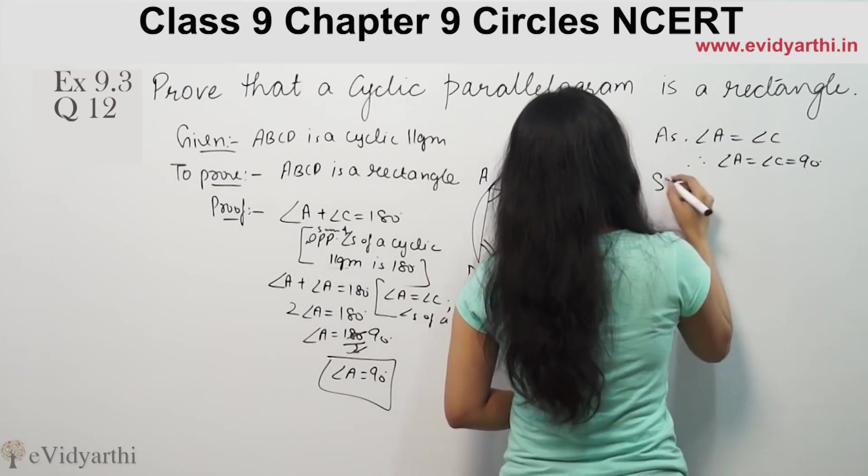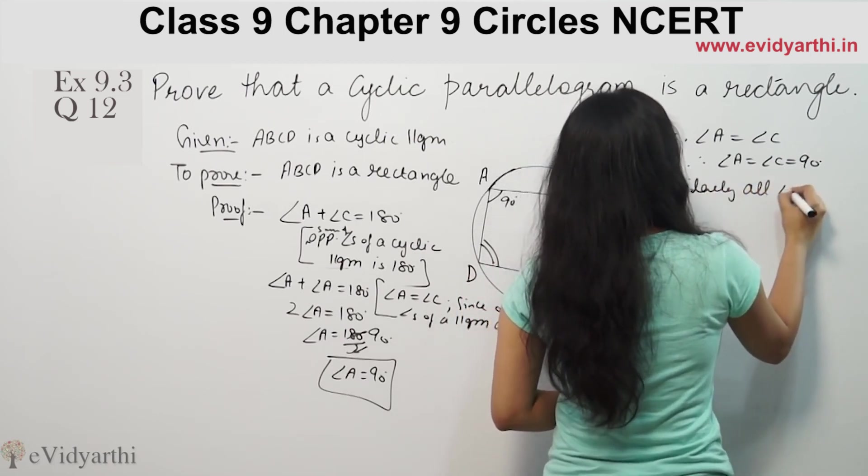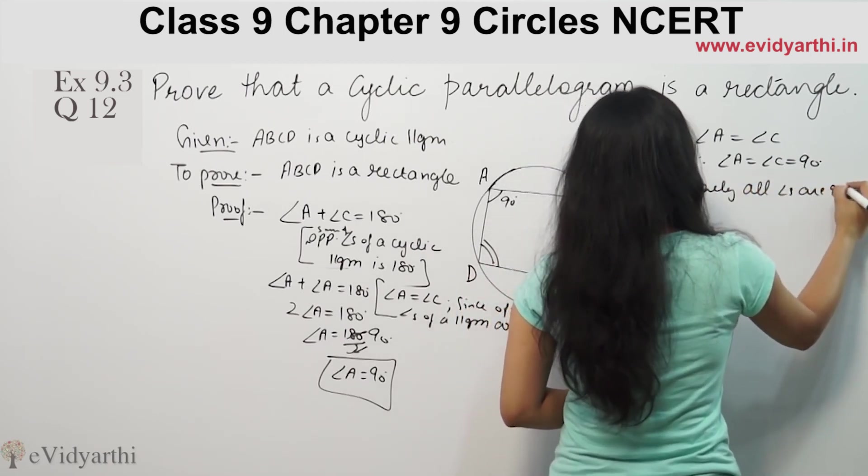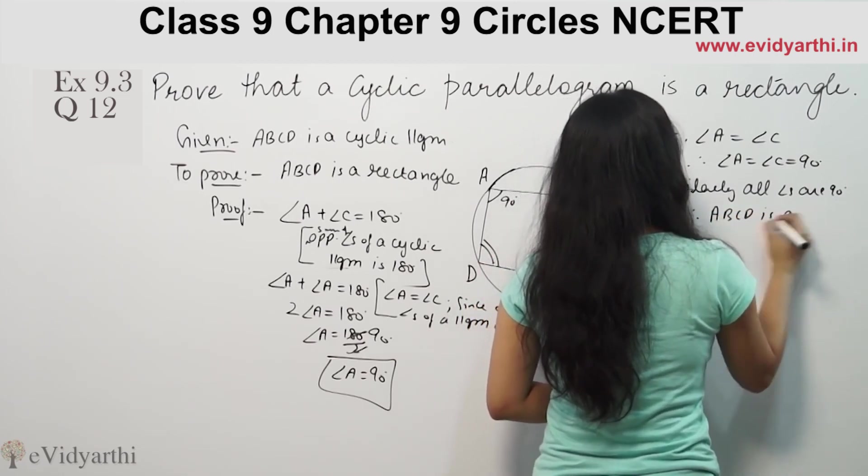Similarly, all angles are 90 degrees, therefore ABCD is a rectangle.